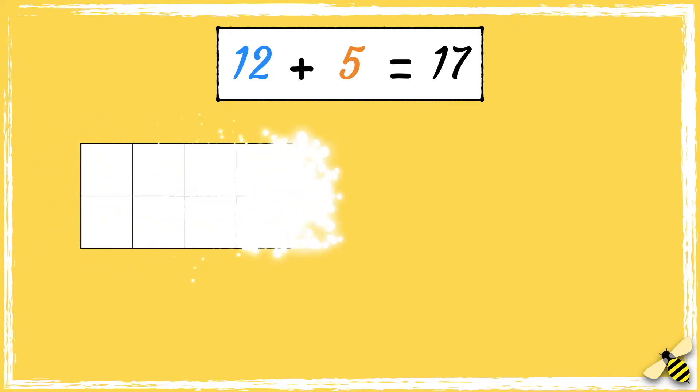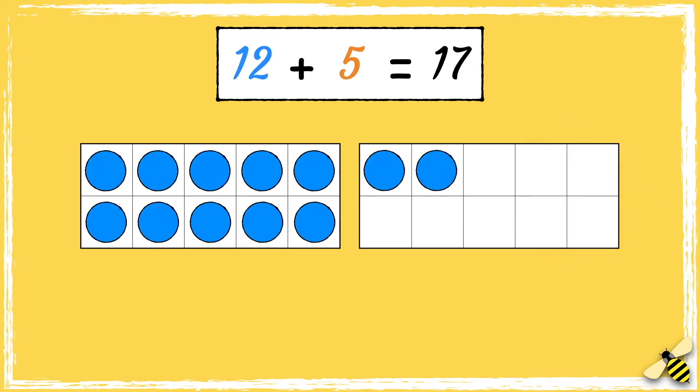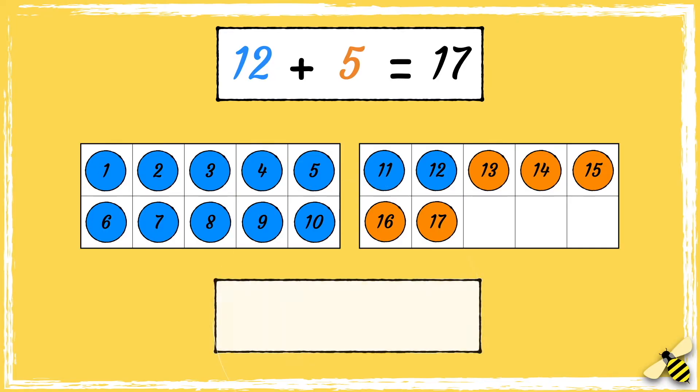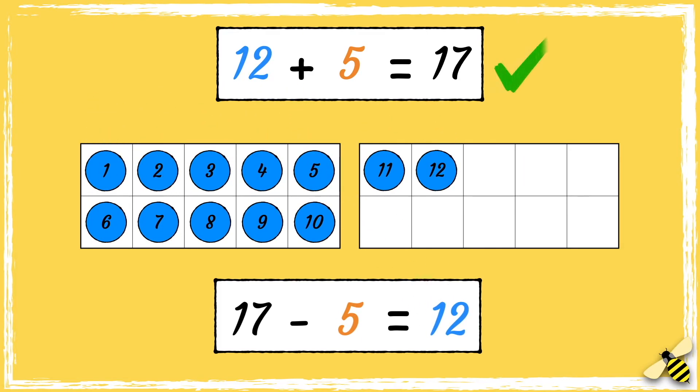For the first method, we use a tens frame. Let's start with 12, add 5. I can see that there are 17 dots out of the 20 spaces. Let's check using the inverse operation. So we start with 17 dots, we take away 5, and we're left with 12. So the calculation is correct.